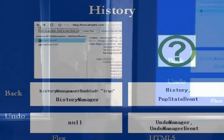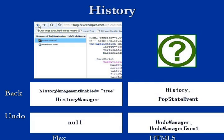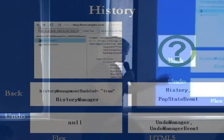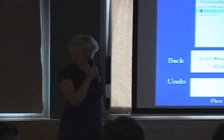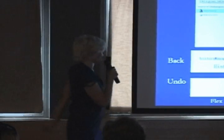There are two types of history in an app. One is navigational — being able to go back using the back button — and both Flex and HTML5 support that. There's also undo functionality, like in a drawing application, and HTML5 does propose an undo manager that would let you do that.